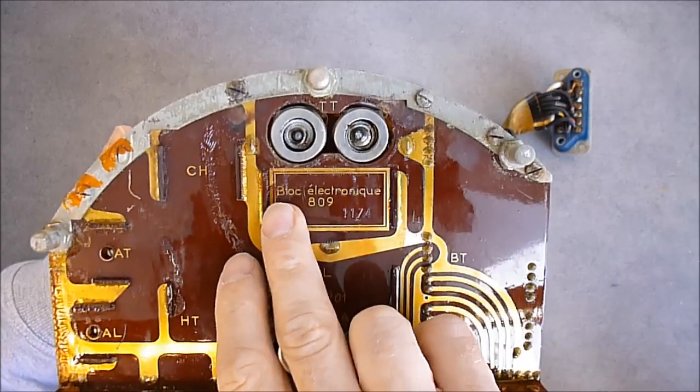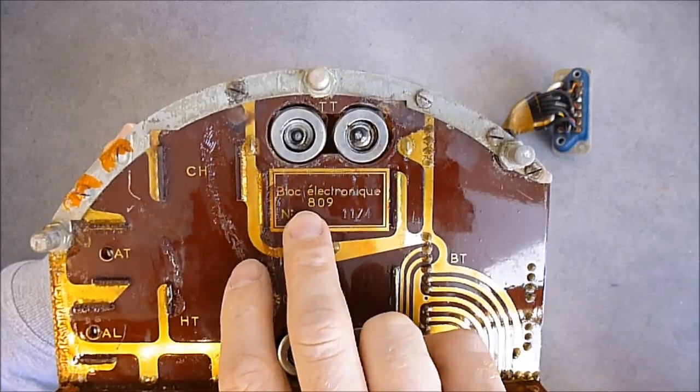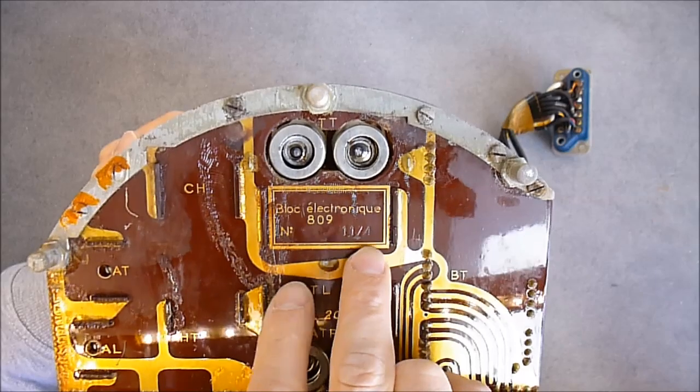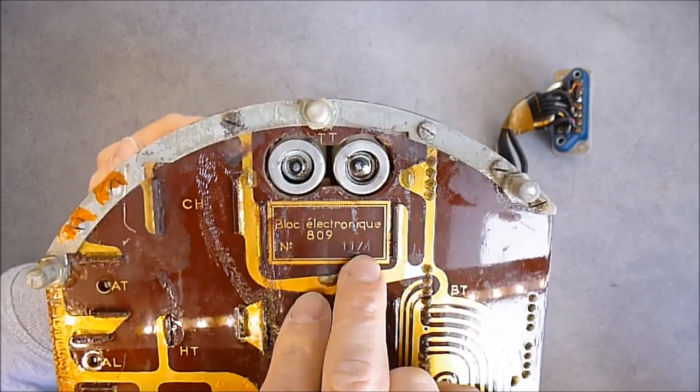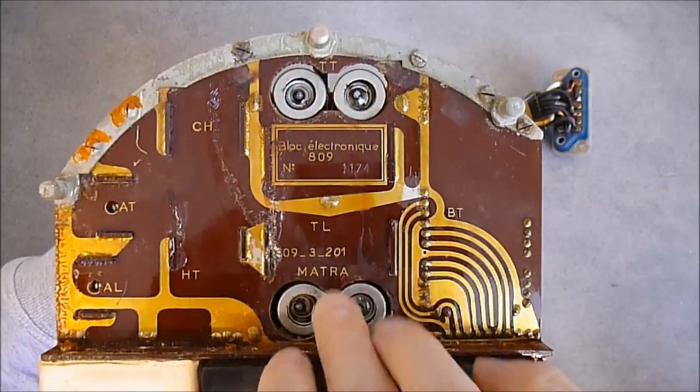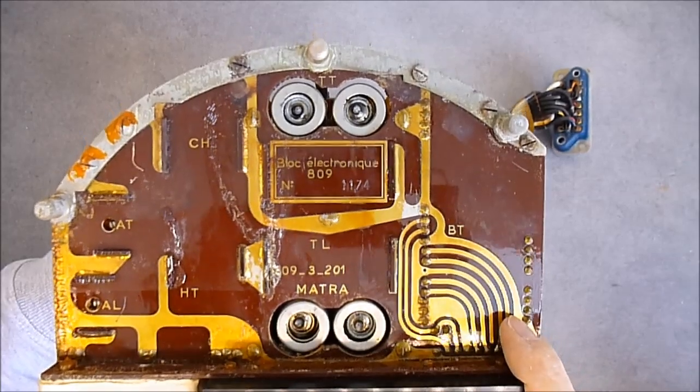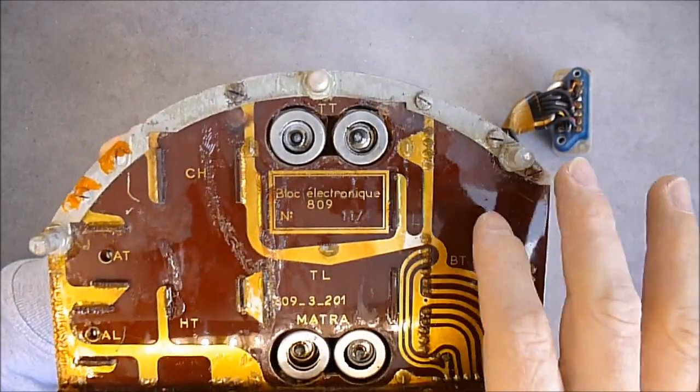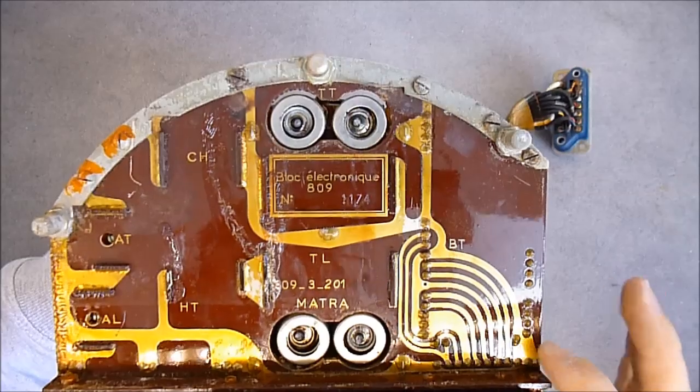And you can see it is written block electronic, 809, serial number 1174. For Matra, some more tracks here, thicker tracks, for power supply maybe.